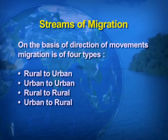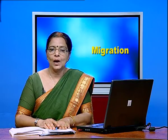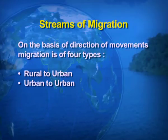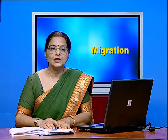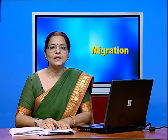A very interesting aspect of migration is the streams of migration. On the basis of the direction of movement, migration is of four types. One: when people migrate from rural area to urban area. Number two: migration from urban area to another urban area. Number three: when people migrate from rural area to rural area. And lastly, migration from urban to rural areas, which is not very common in India.